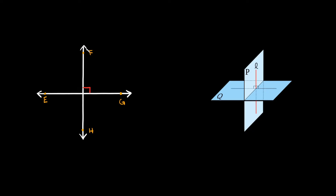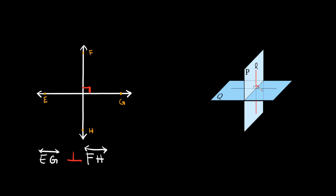Now let's talk about perpendicular lines and planes. Two lines are perpendicular when they intersect and form a right angle — you can always tell by the little square symbol at the intersection. So line EG is perpendicular to line FH. Just like lines, two planes can also be perpendicular: plane P here is completely vertical and plane Q is completely horizontal, and again you can see the right angle symbol where they meet.